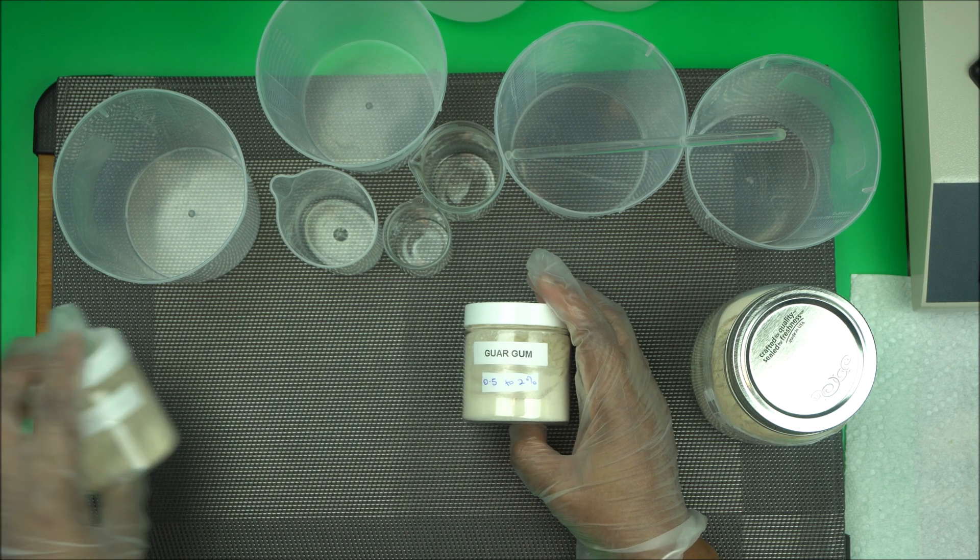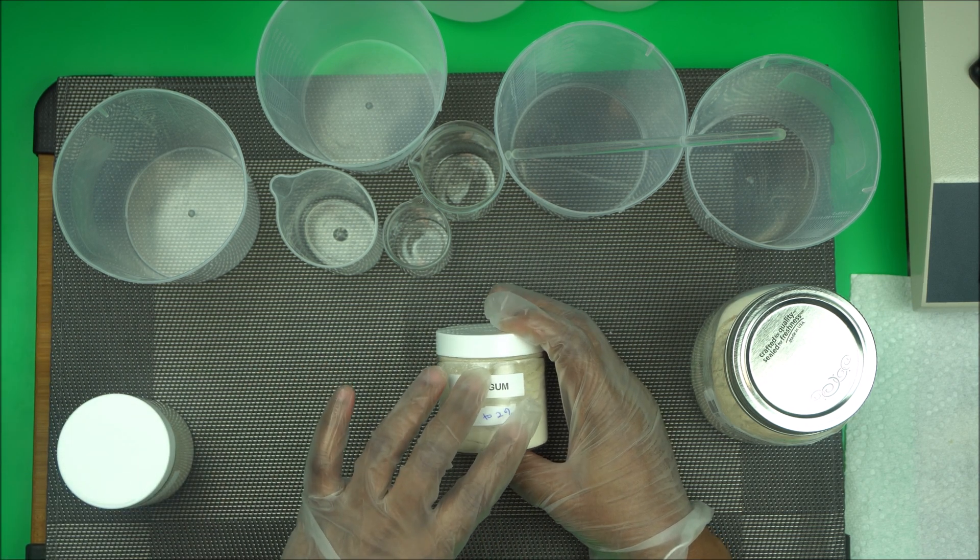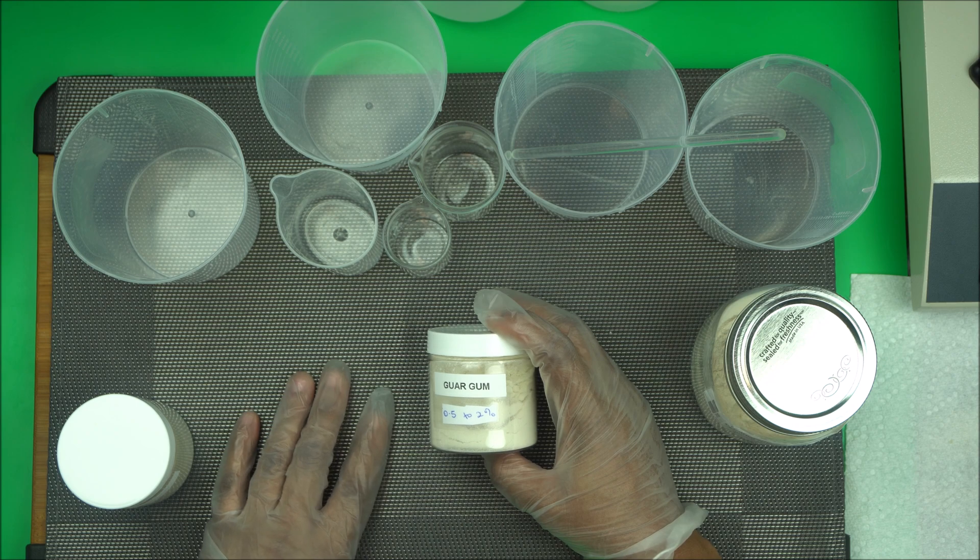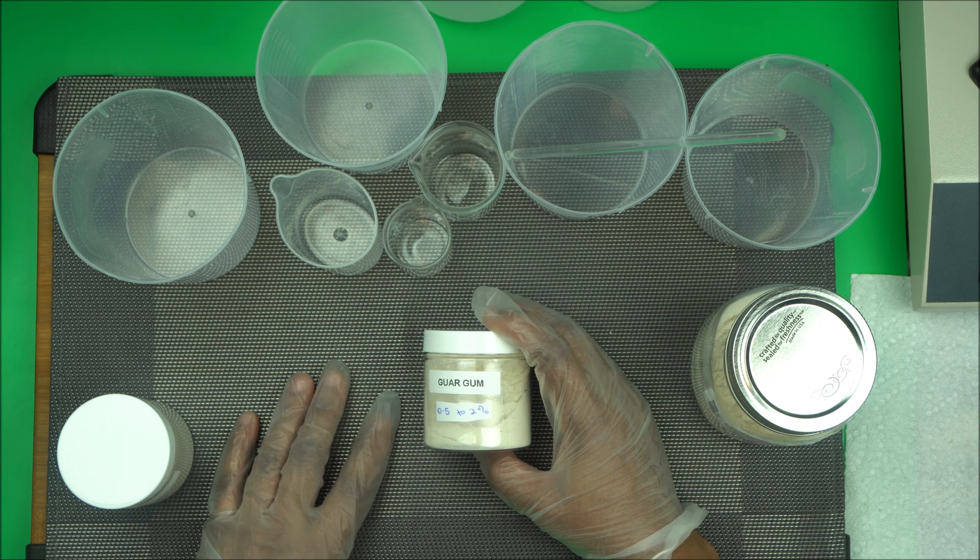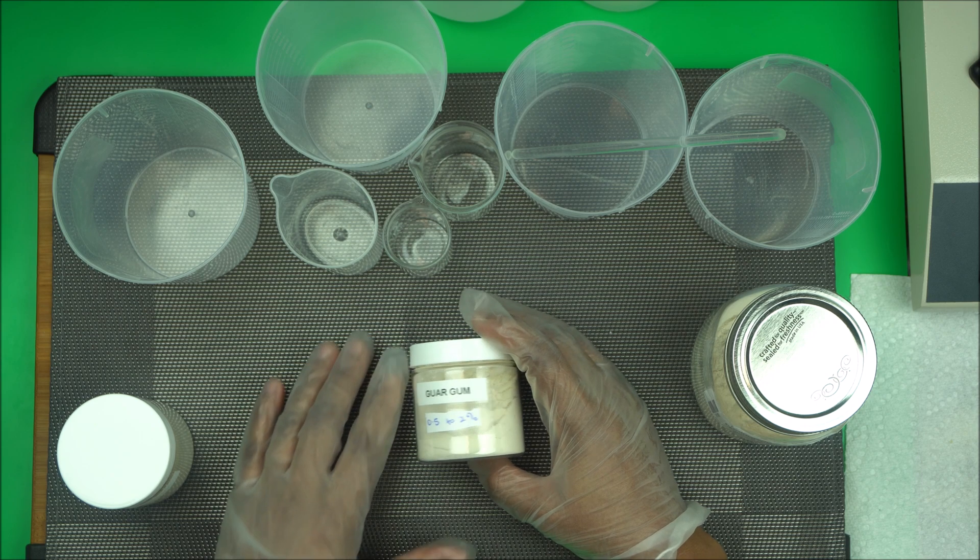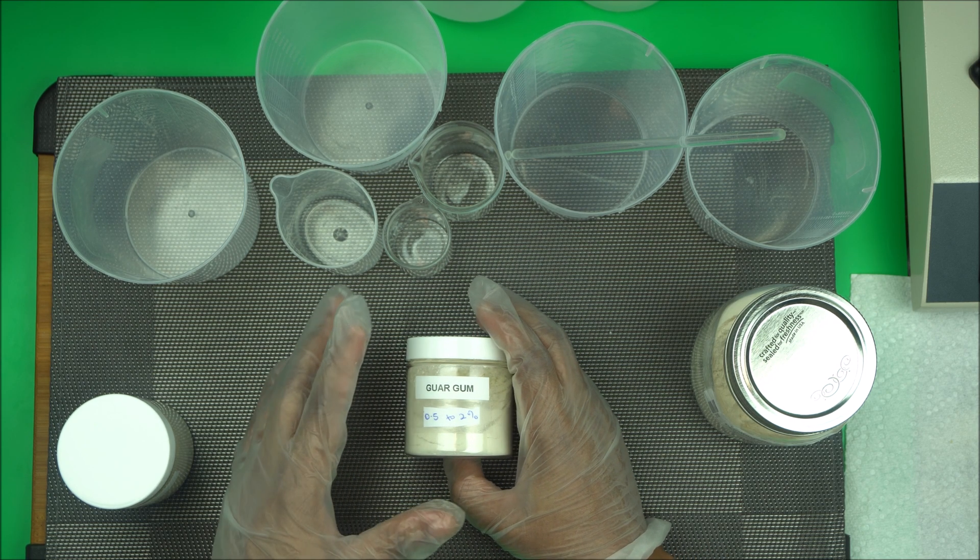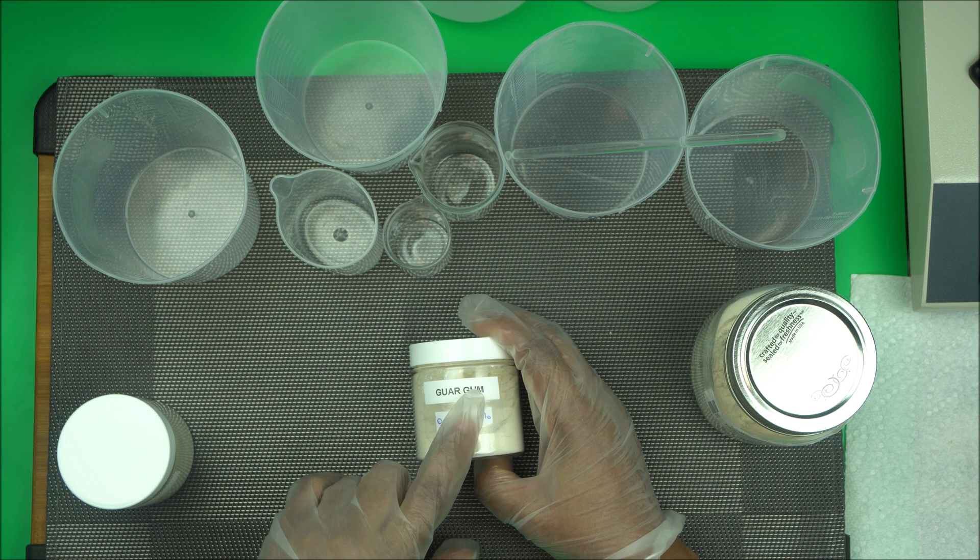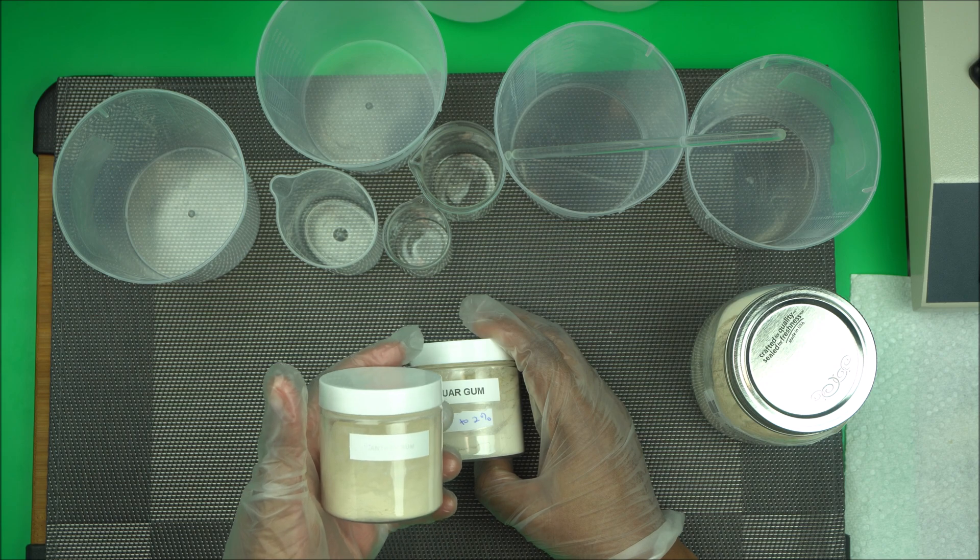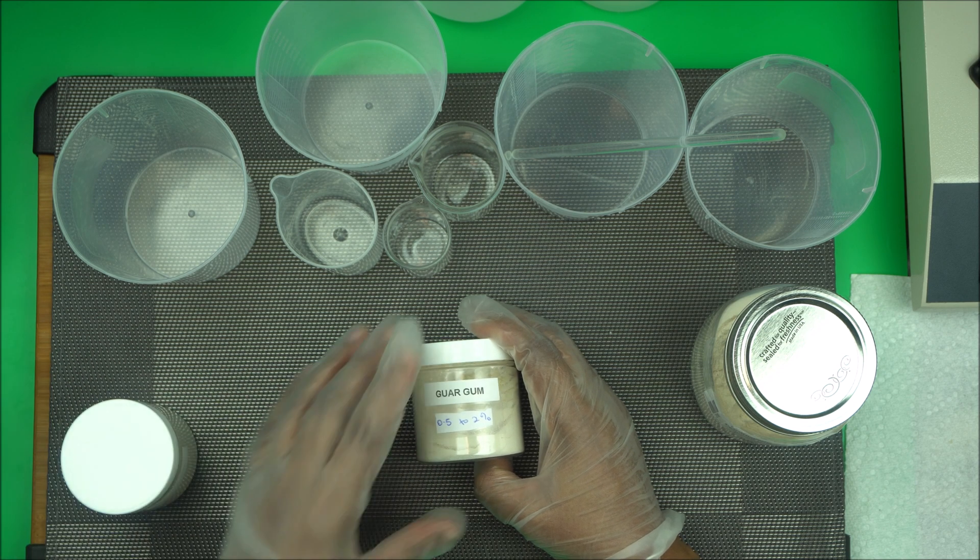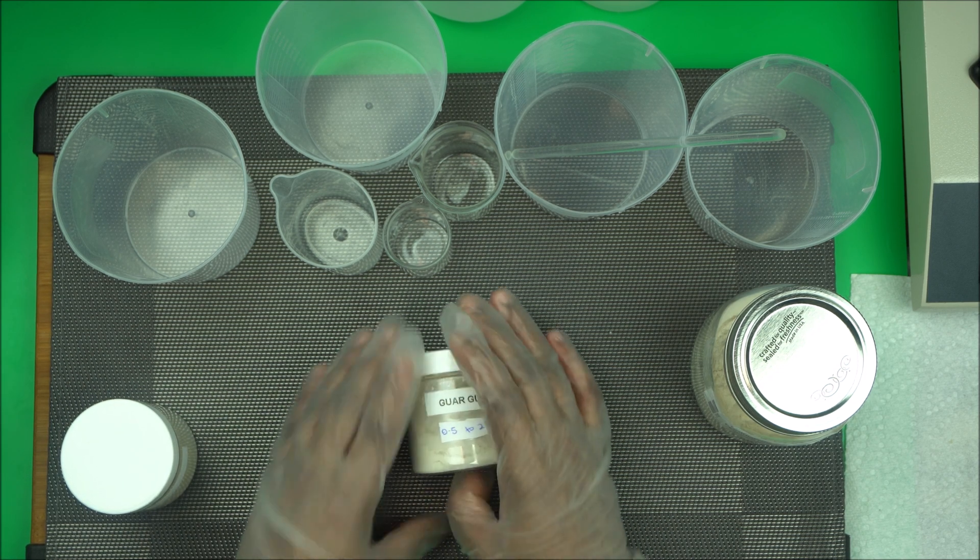But guar gum is very good to make shampoo. And it can easily be dissolved also in water at any temperature, whether cool or warm. So that's the good thing about this too. So you can hydrate this the same way we hydrate xanthan gum. This can easily go in water, better than xanthan gum.